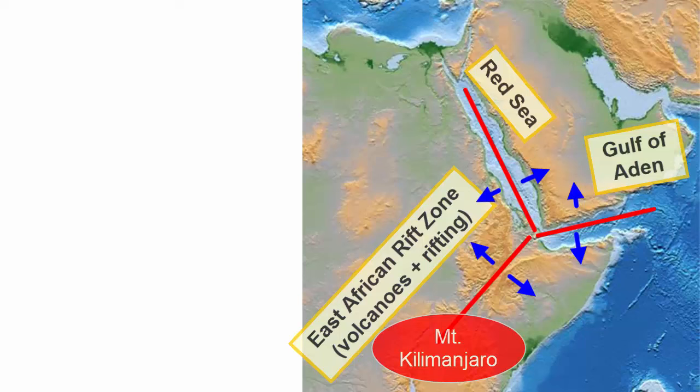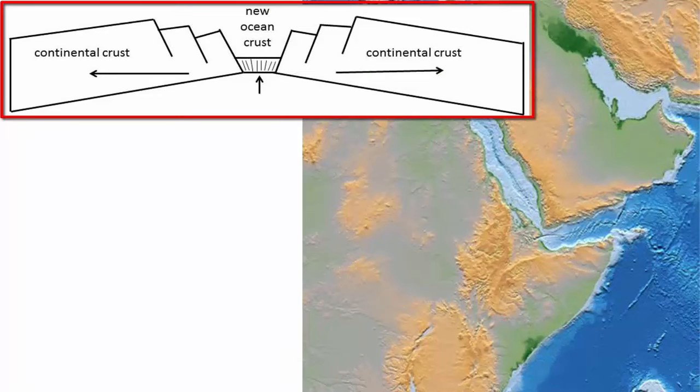A triple junction where three seafloor spreading centers come together, just like we saw in the center of the Indian Ocean. This cartoon shows what a divergent plate boundary first looks like as it breaks through continental crust.